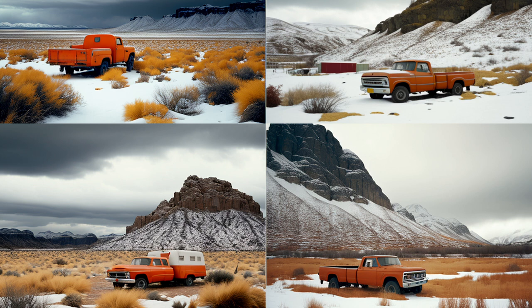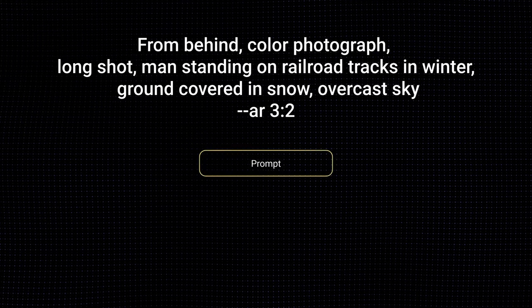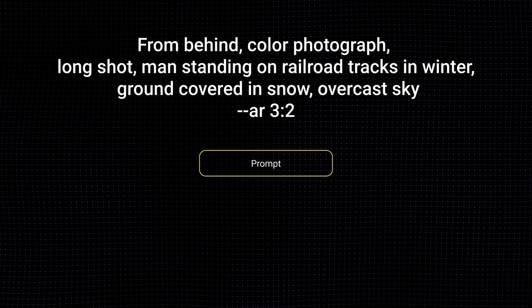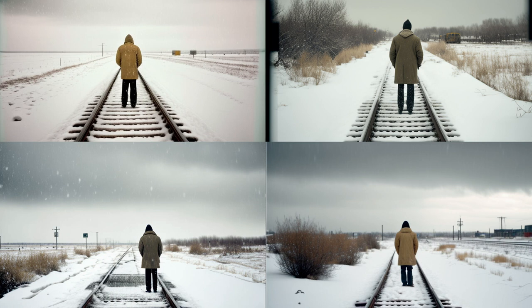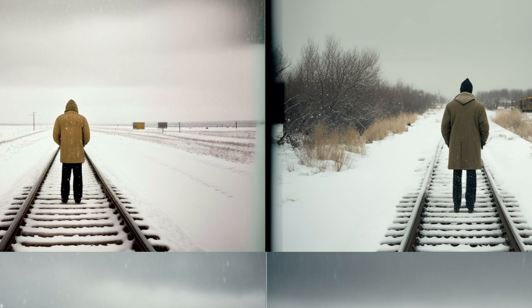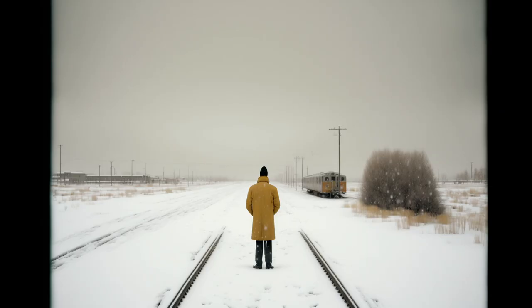Let's move on to a different scene. From behind, color photograph, long shot, man standing on railroad tracks in winter, ground covered in snow, overcast sky. These do look photorealistic — often you can get photorealism from simply the type of scene without specifying any additional prompts. As an experiment, I'm going to try a film stock I've not used before: Fuji Astia 100F. These are very nice compositions. Upscaling the lower right — I like this image a lot, but there's still a stuck-on quality to the picture, with sharp contrast throwing off the depth of field to a degree that seems unnatural.